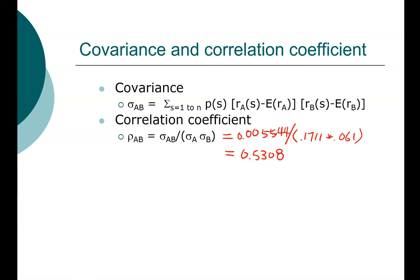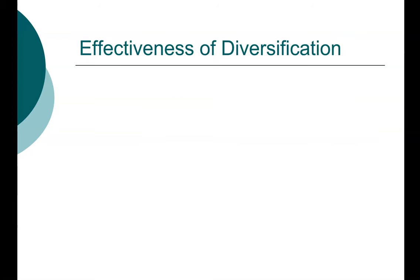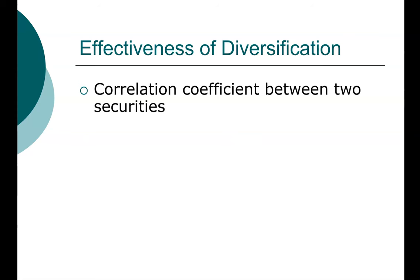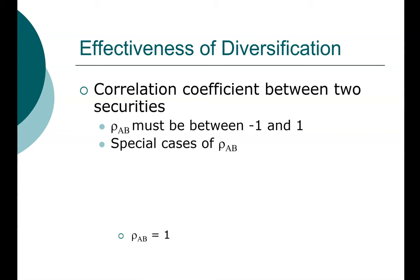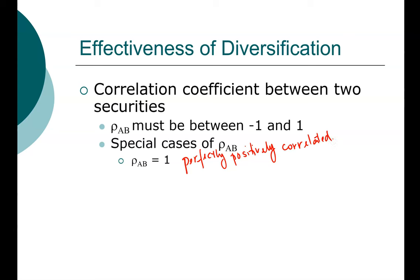The correlation coefficient is a standardized measure. Because it is standardized, we can use it to help us understand the effectiveness of diversification. The correlation coefficient between any two securities has to be between minus 1 and 1. The first special case is when the correlation coefficient is exactly equal to 1 — we say the two stocks are perfectly positively correlated. When they are perfectly positively correlated, the two stocks act as though they are in lockstep: if you know that stock A goes up, you know with 100% probability that stock B will also go up.